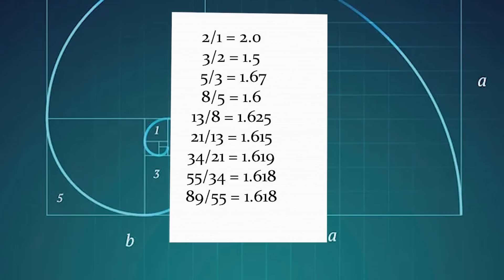If you look at the ratio between successive numbers in the Fibonacci sequence, the higher up you go, the closer and closer they get to this Golden Ratio. Unlike the Fibonacci series, the Golden Ratio has been known about and studied since ancient Greek times. It represents a point on a line that's neither a third nor a half, and some argue that when a work of art or a building incorporates the ratio, it looks better, it looks more in proportion.